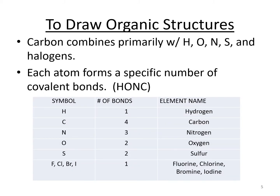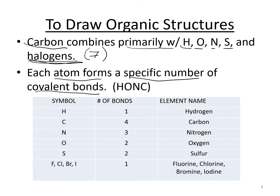Carbon bonds primarily with hydrogen, oxygen, nitrogen, sulfur, and the halogens (column seven on the periodic table). Each atom forms a specific number of covalent bonds with carbon. We can use the HONC mnemonic with 'one, two, three, four' to remember: hydrogen forms one covalent bond, oxygen forms two, nitrogen forms three, and carbon forms four.